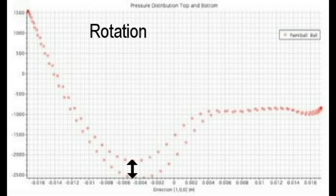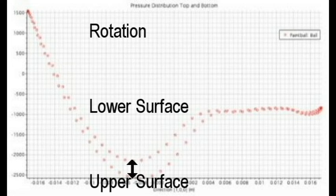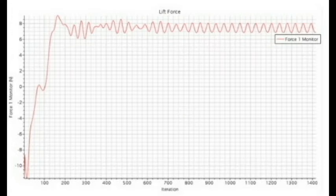For the rotating ball, the pressures along the top and bottom differ. The upper line corresponds to the lower surface and the lower line corresponds to the upper surface. The drag and lift are found by finding the integral of the pressure along the entire surface of the ball. In this scenario, the force acting in the y-direction on the bottom surface exceeds that of the top.